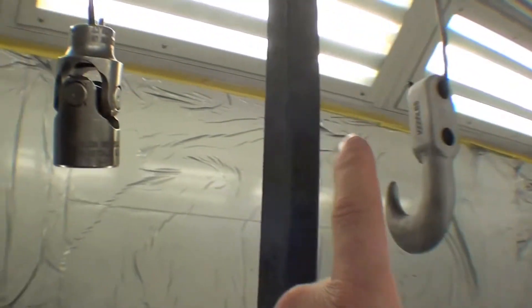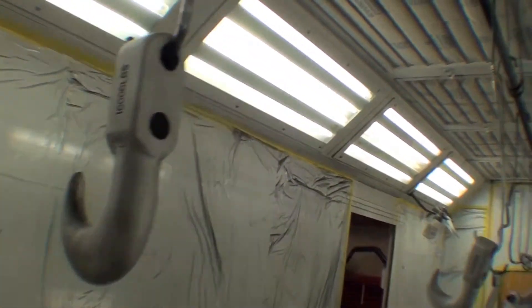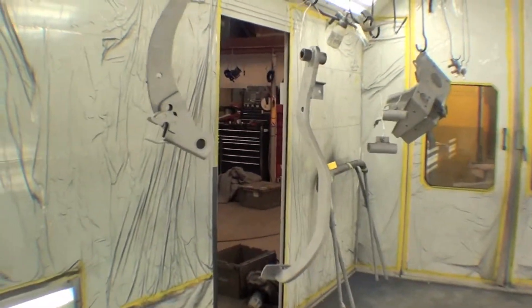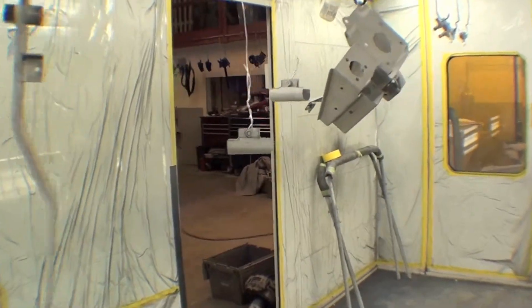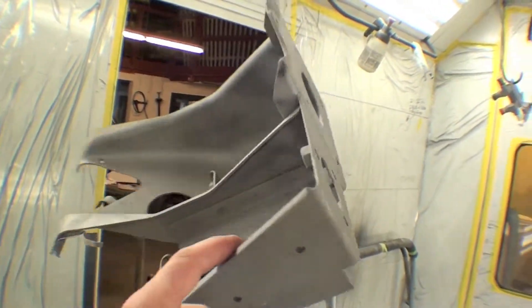That right there is a universal joint for power steering. That's the hook that goes on the outside. You notice another hook down here and more brackets down here for pedal assemblies and things. This is the pedal assembly that goes underneath where the brake and the clutch go.